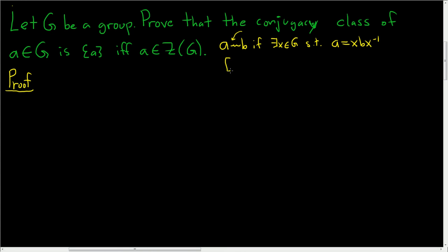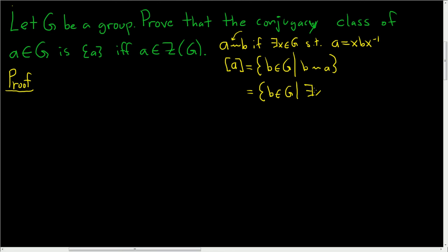And the conjugacy class is the equivalence class under this relation. So this is the set of all the B's in G such that B is conjugate to A. In other words, this is the set of all the B's in G such that there exists an X in G such that B is equal to X A X inverse. So that's the conjugacy class of A.